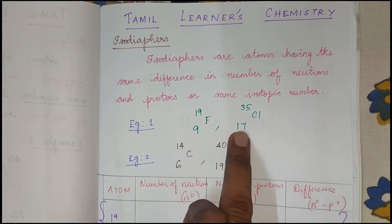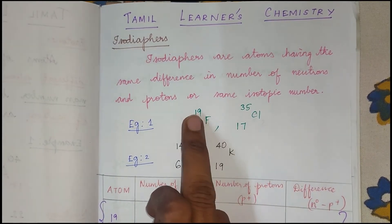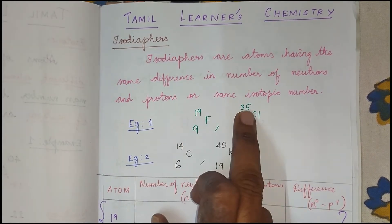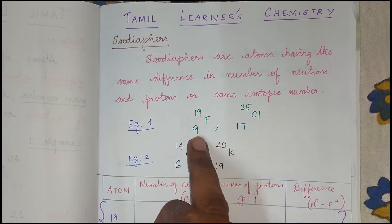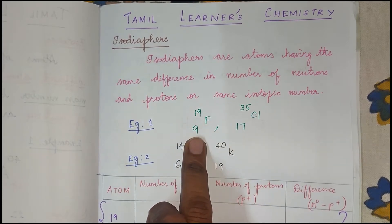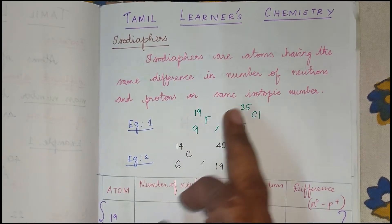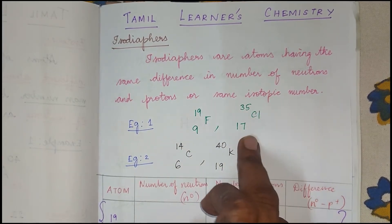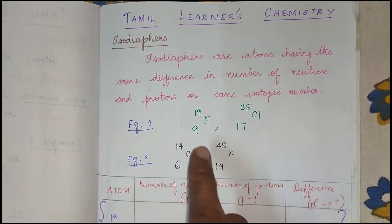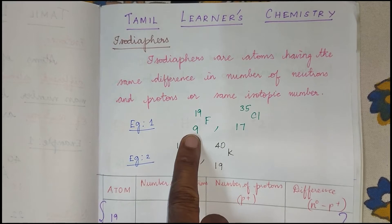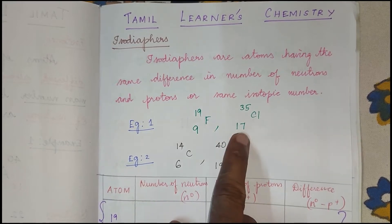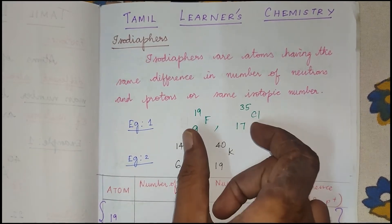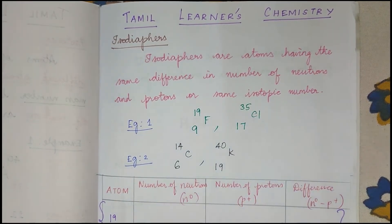The atomic number, mass number, neutrons, and protons may not all be the same. But if the difference between the number of neutrons and the number of protons is the same, the answer will be iso-diaphors.